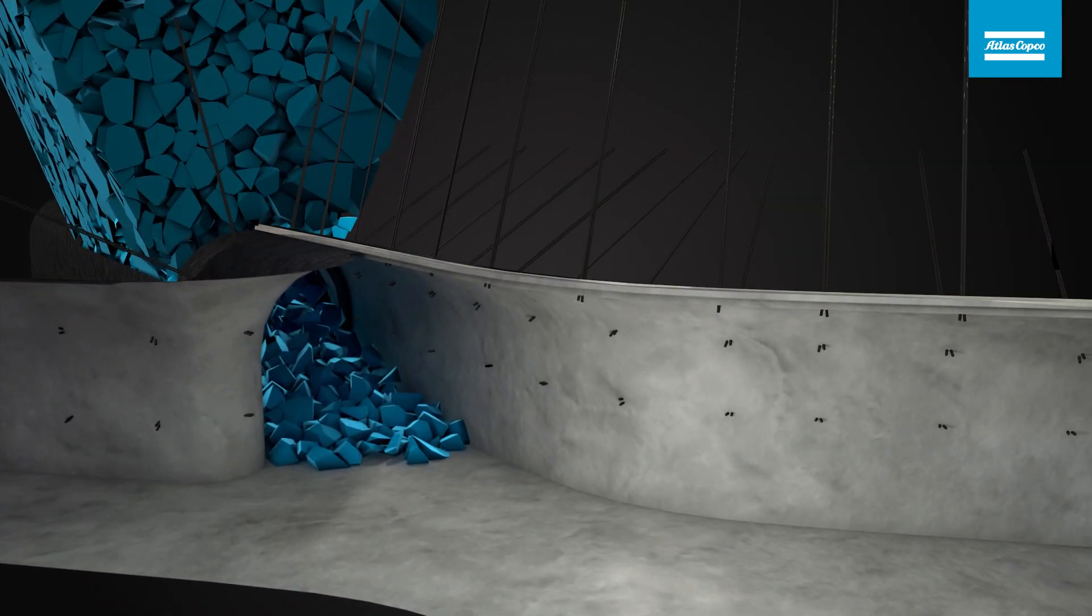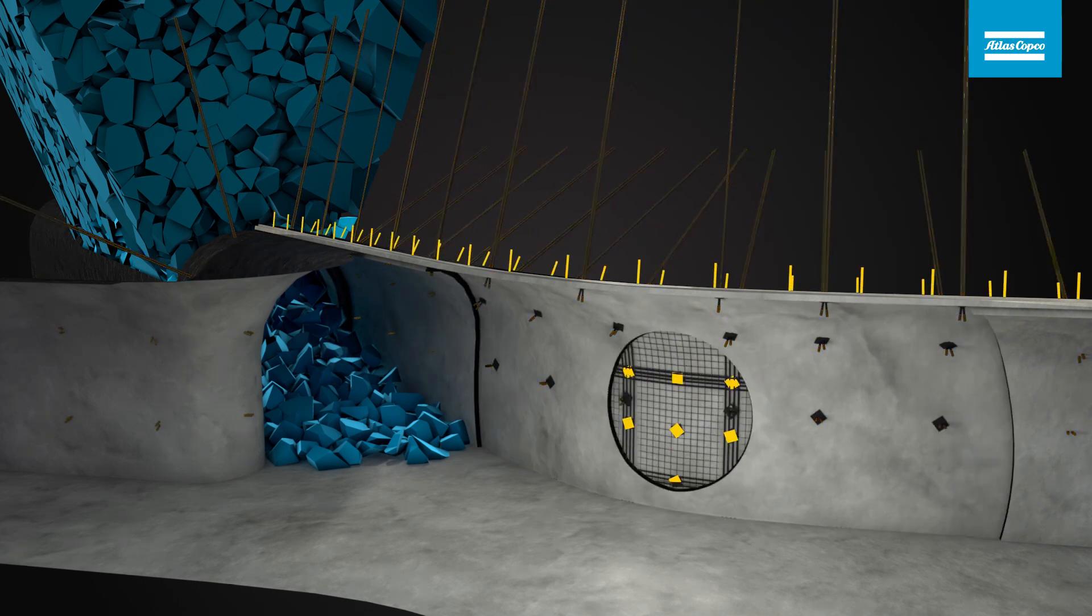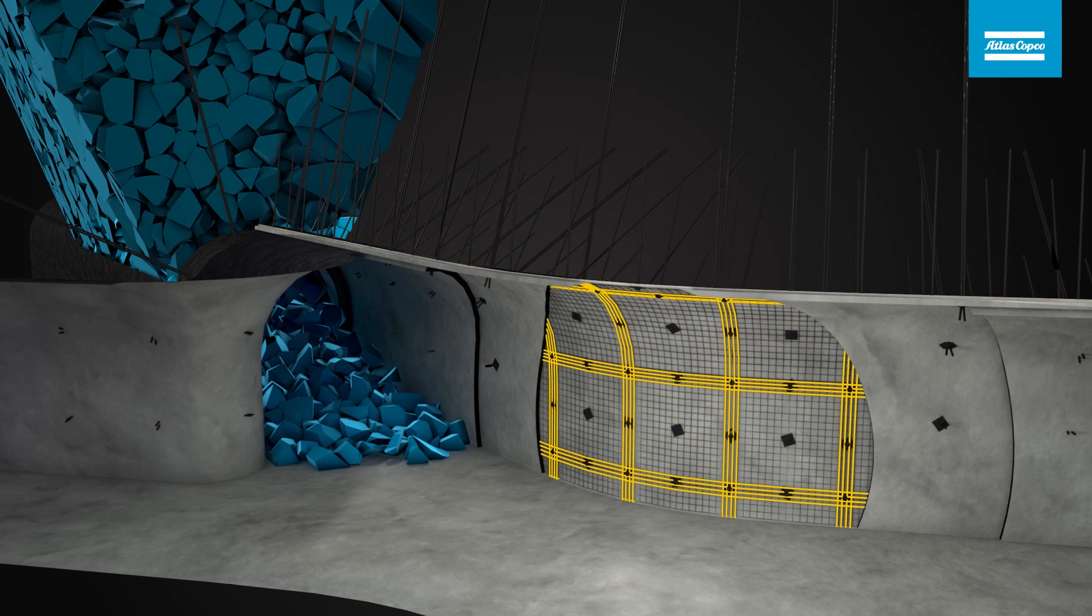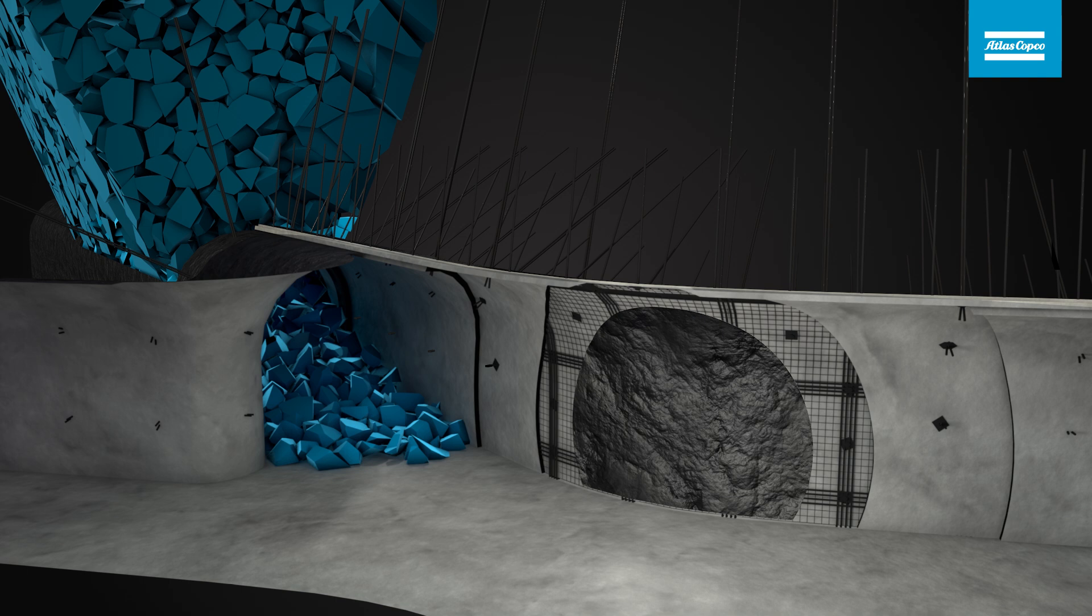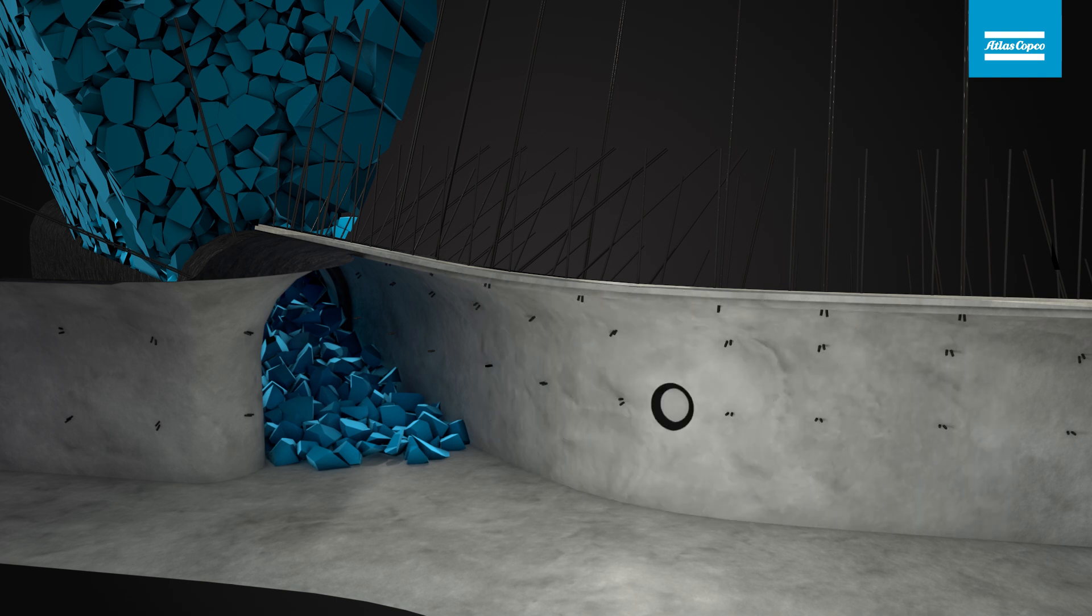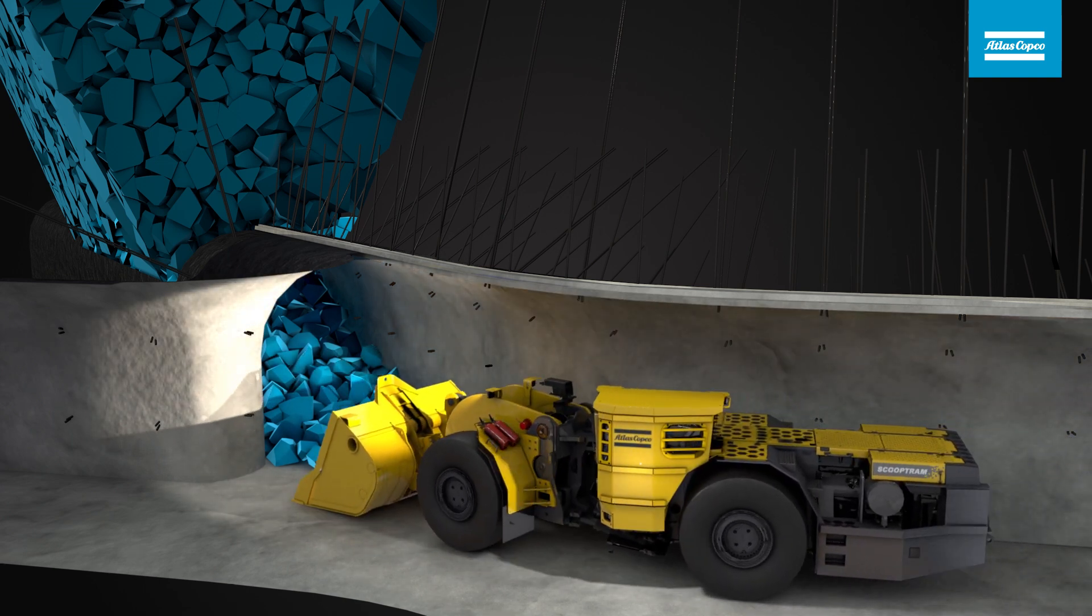Substantial rock reinforcement, such as steel arches, sprayed concrete, cable bolts, rock bolts, steel mesh and straps, are usually required due to several factors associated with block caving, including extreme rock stress changes and a long production period.